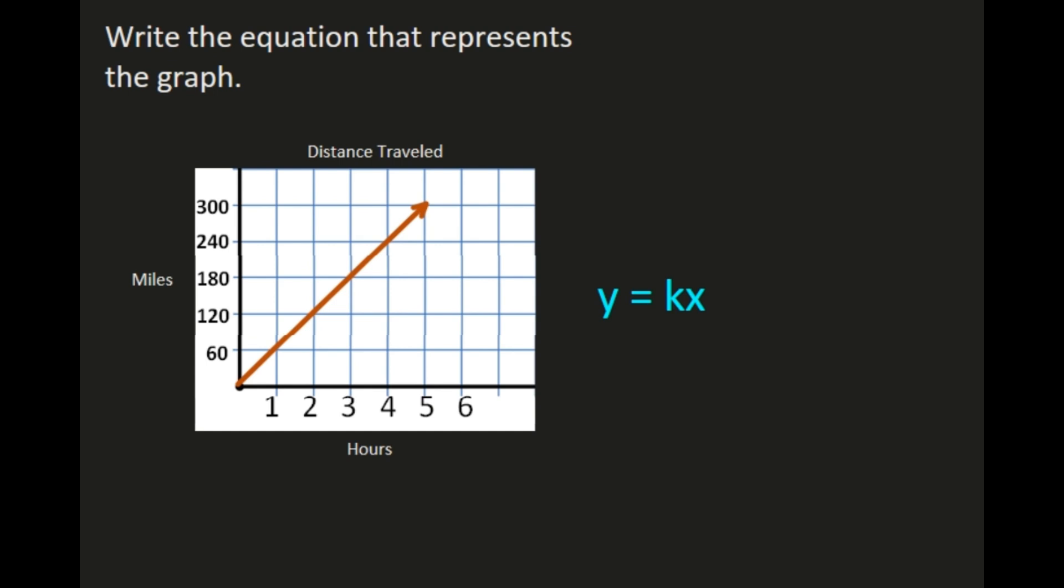And that formula for calculating k is k equals y over x. So I need to choose a point on this graph so I can get a y value and an x value in order to calculate our constant of proportionality. And we want to choose, when we can, the point on our graph where x is 1 because it's an easier calculation. So I'm going to use the point 1, 60 to calculate my constant of proportionality.